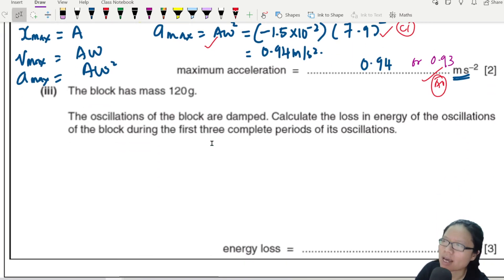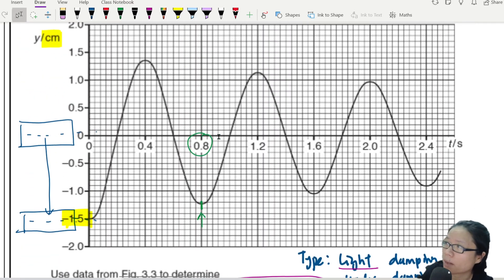Part three. The block has a mass of 120 grams. The oscillation of the block is damped. Yes, I identified that. Calculate the loss in energy of the oscillation of the block during the first three complete periods of its oscillation. Let's go up there and count. What's the first three complete oscillation? I teach you to count in Malay for our international audience. This one is 1. Here is the second oscillation, 2. This is the third oscillation, 3. So, first, second, third oscillation. Hey, what is the amplitude of our third oscillation?